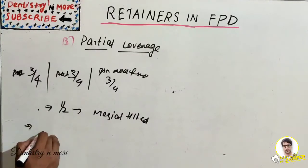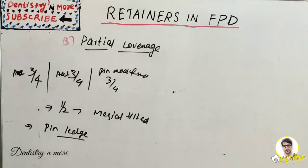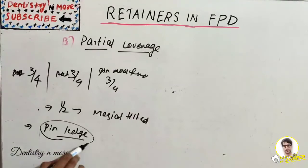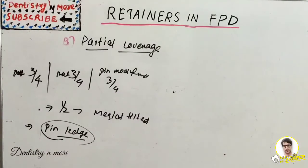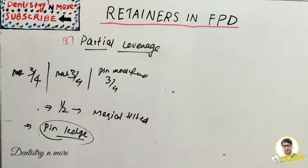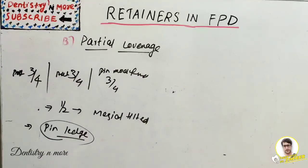The pin ledge is a technique that employs parallel long pins prepared in the lingual or palatal surface of the clinical crown in order to increase the retention of the restoration. Pins are placed in the palatal or lingual surface, and the restoration uses both grooves and pins for retention.